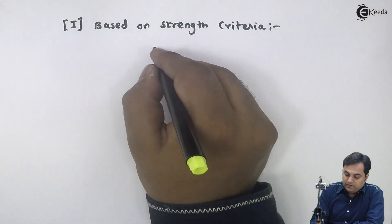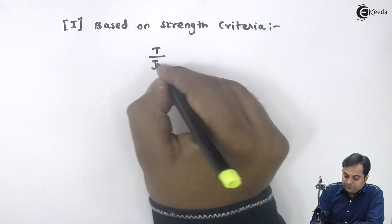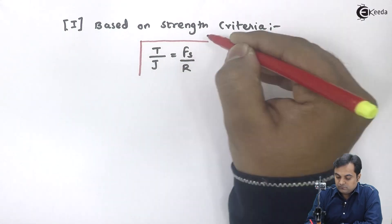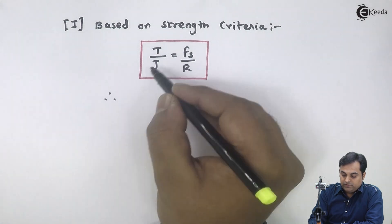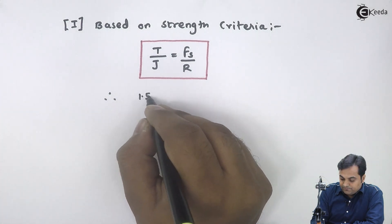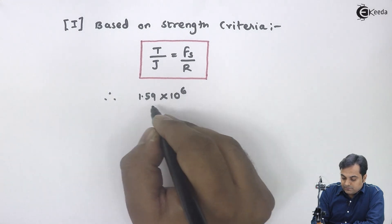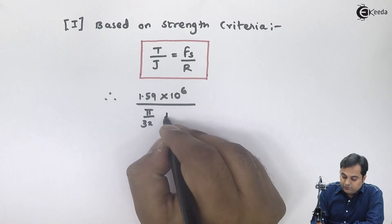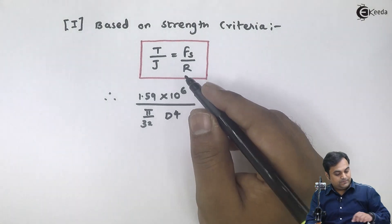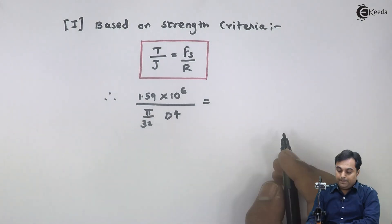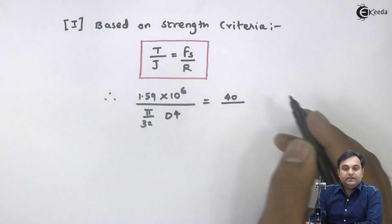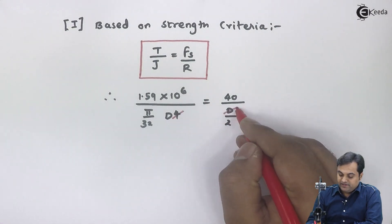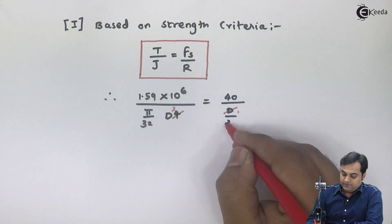Based on strength criteria, the formula is T/J = fs/R. Therefore, T = 1.59 × 10⁶, J = πD⁴/32 for a solid shaft, fs = 40 N/mm², and radius R = D/2. Substituting and simplifying, D cancels and we get D³ with a factor of 16.